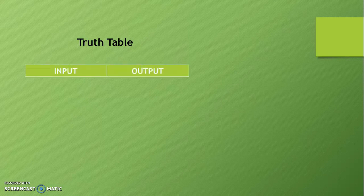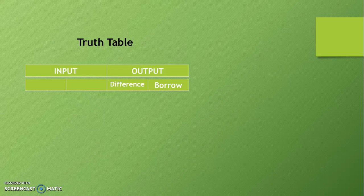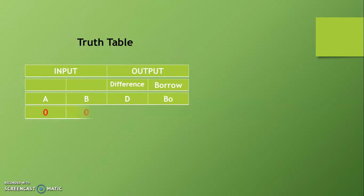Now let us prepare a truth table for the half subtractor. We have considered two inputs A as well as B, so total four input combinations are possible: 00, 01, 10, and 11. We have inputs as well as outputs. The outputs are difference D and borrow BO. For the first condition 00: difference is 0 and borrow is also 0.